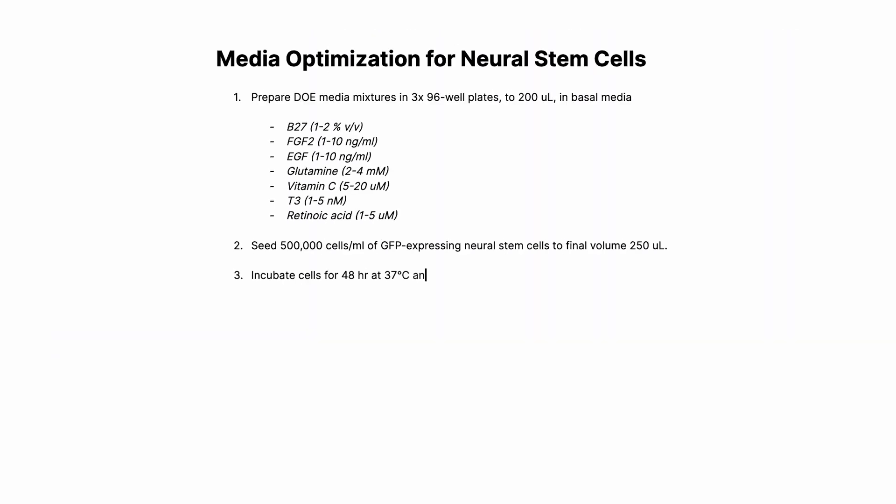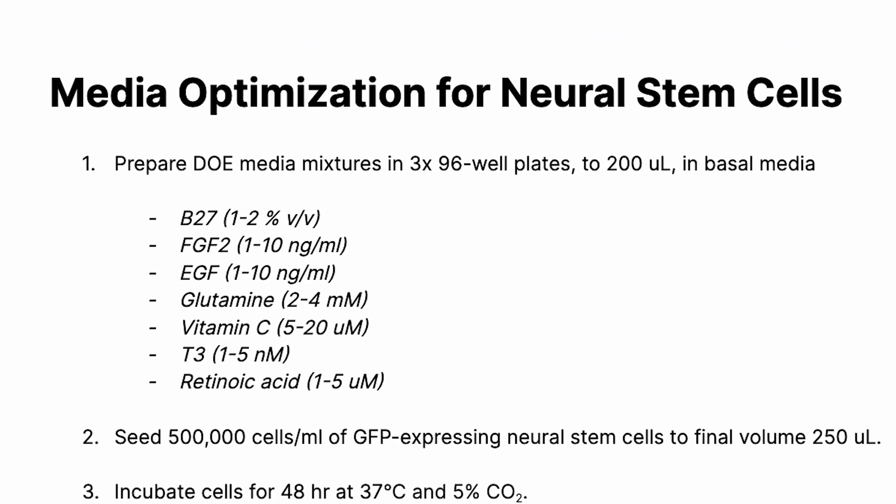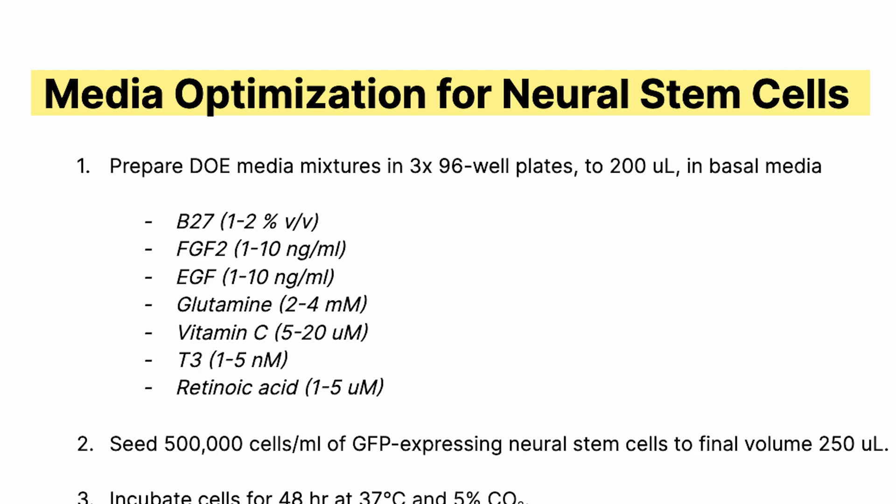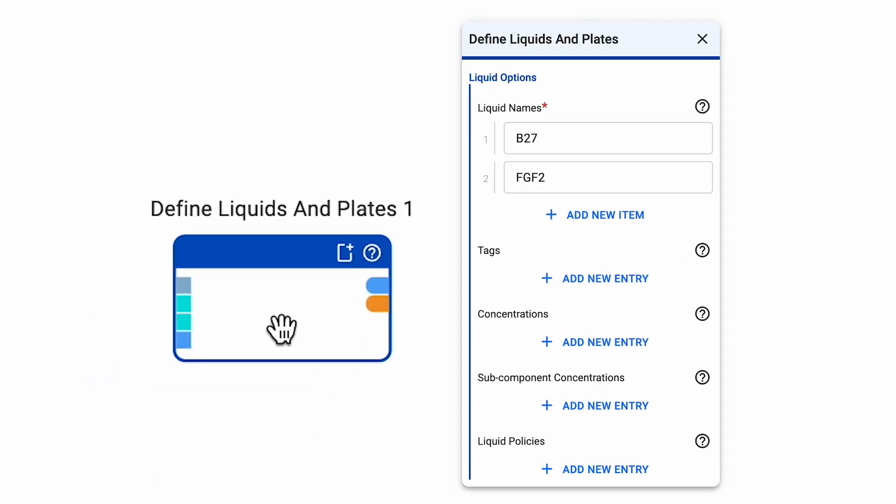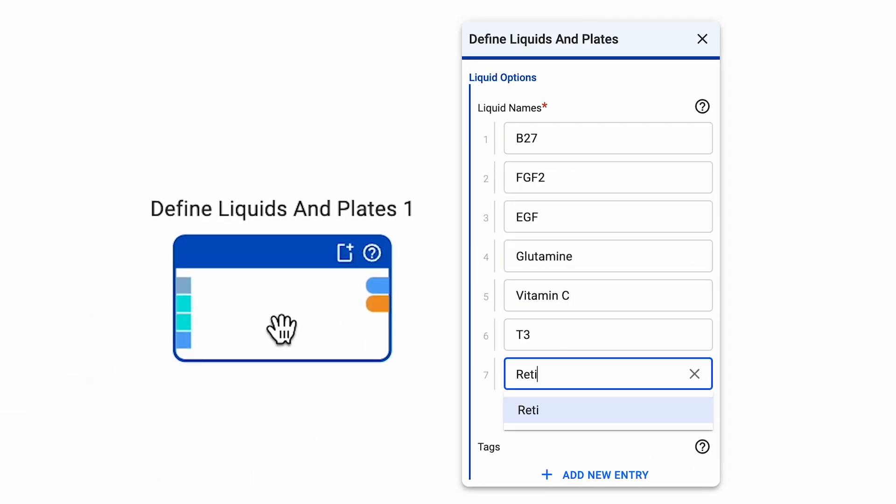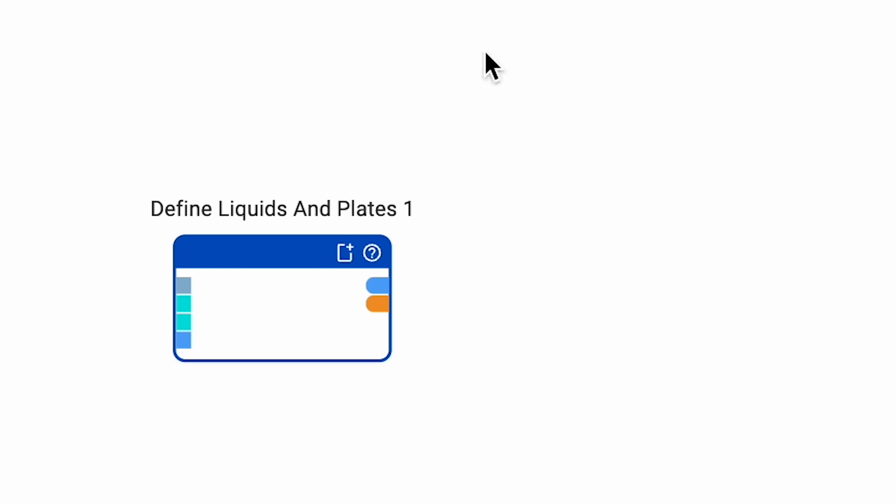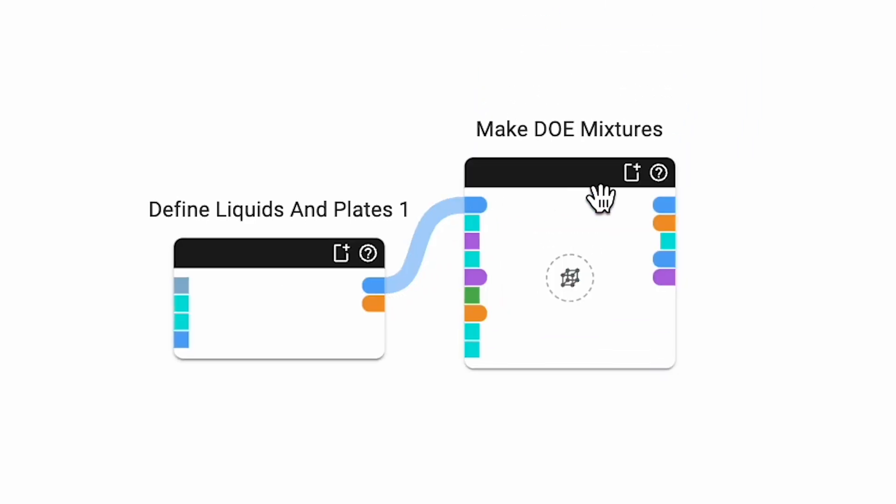We can plan out the steps of our experiment, media optimization for neural stem cells, in the Synthase no-code workflow builder. Simply define the names of our media components, tell Synthase what we want to do with them, and then repeat.